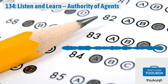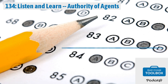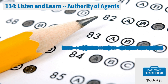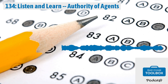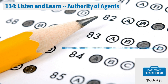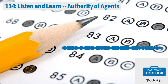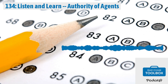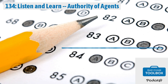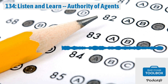Welcome back to the Listen and Learn series from the Bar Exam Toolbox podcast. Today we're going to be talking about authority of agents. You are most likely to encounter agency in combination with another business association's topic, such as partnership. If you're taking the California Bar Exam, you may also encounter it in combination with professional responsibility. This is one of the most heavily tested issues on the Bar Exam, appearing at approximately 21% of UBE essays and 16% of California Bar Exam essays.